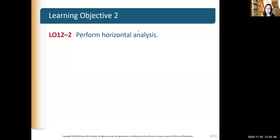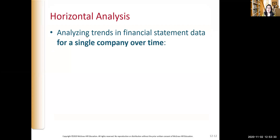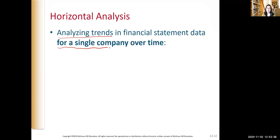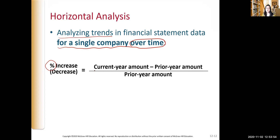So what is horizontal analysis? Horizontal analysis means we want to analyze trends in financial statement data for a single company over time — basically the same company comparing this year with last year. It represents percentage of change, which can be increasing or decreasing. The formula is: current year amount minus prior year amount, divided by prior year amount.